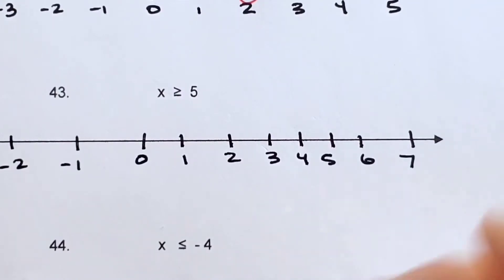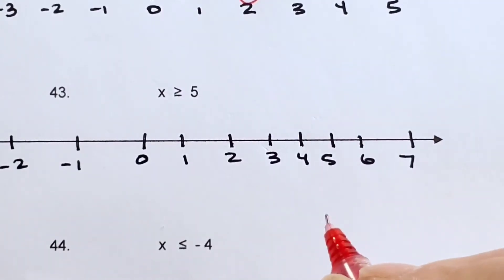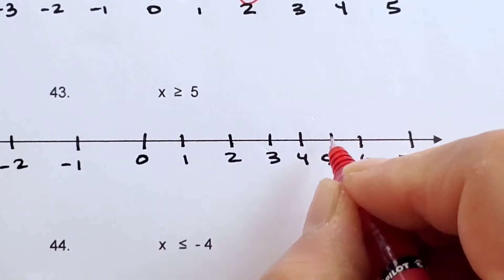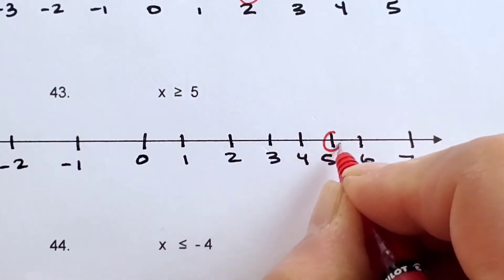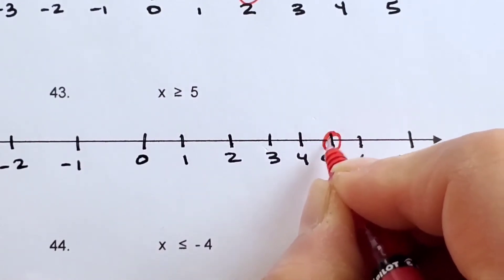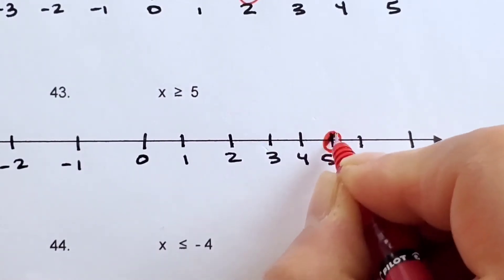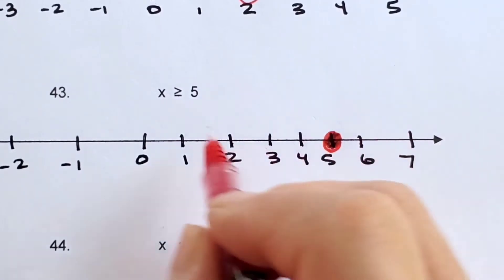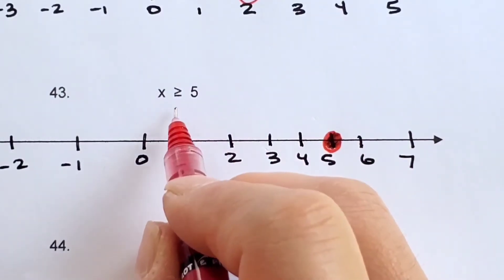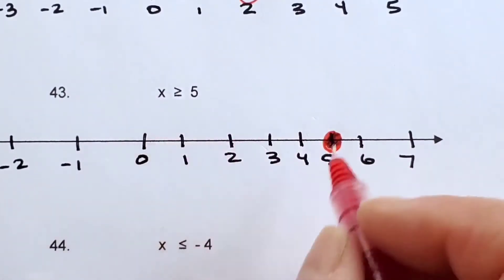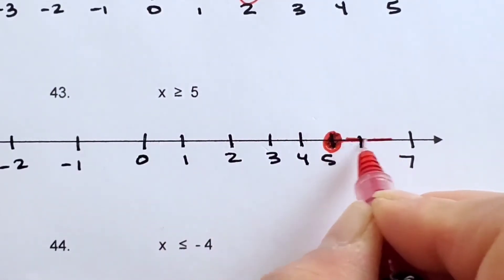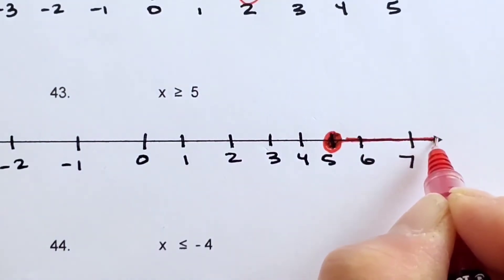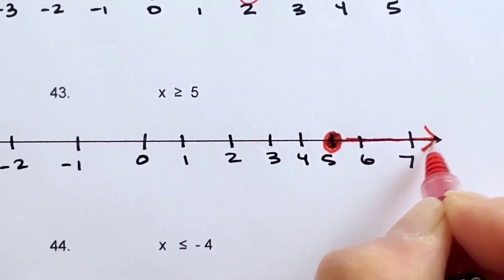Number 43: x is greater than or equal to 5. Find your 5 — it's equal to 5, so you're going to have a closed point. And it's everything greater than 5, so everything to the right with an arrow.